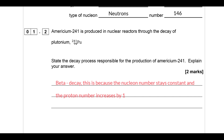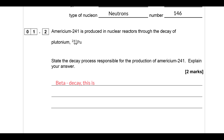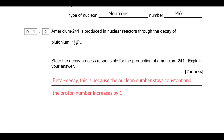We know it's beta minus decay - that's the stating part of it. The first thing is that the nucleon number stays the same, and the second part talks about the fact the proton number increases by one, so a neutron has turned into a proton essentially. That would be your answer to this question.